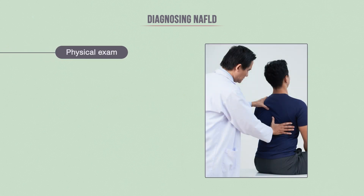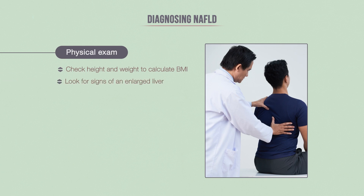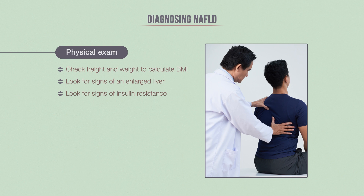If any type of liver disease is suspected, your doctor will order certain tests to confirm. Diagnostics will begin with a physical exam. The doctor will check your height and weight, which will then be calculated to determine your body mass index, or BMI. The doctor will then look for signs of enlarged liver, signs of insulin resistance, which includes darkened skin patches on your body, and signs of cirrhosis, such as jaundice.